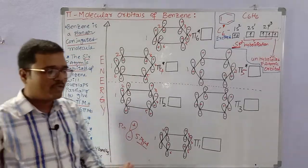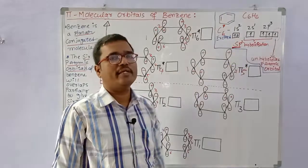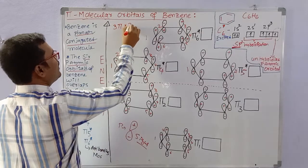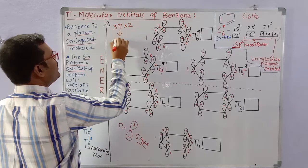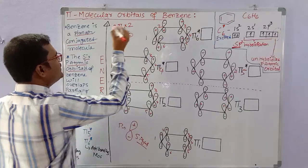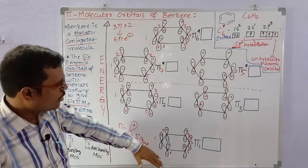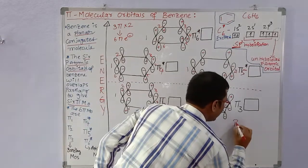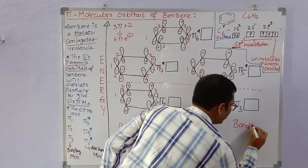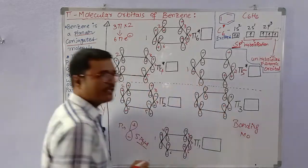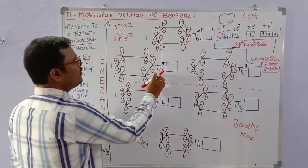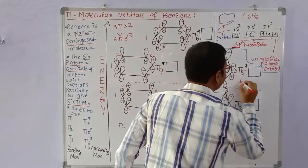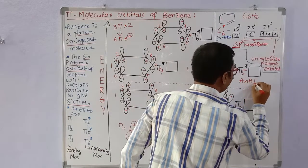Benzene has 3 pi bonds, and each pi bond has 2 electrons, so there are 2 × 3 = 6 pi electrons in total. These 6 pi electrons occupy the molecular orbitals. Pi1, pi2, and pi3 are the bonding molecular orbitals with low energy, while pi4*, pi5*, and pi6* are the anti-bonding molecular orbitals with high energy.